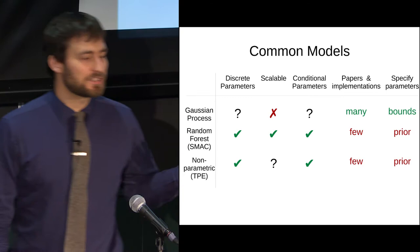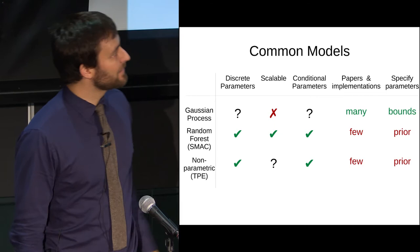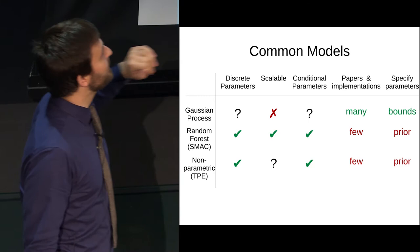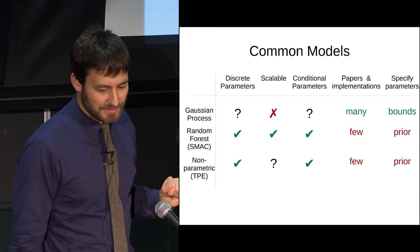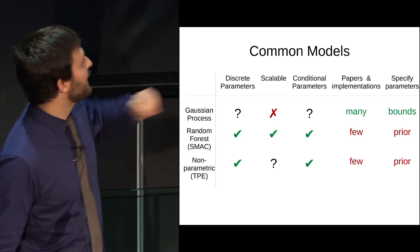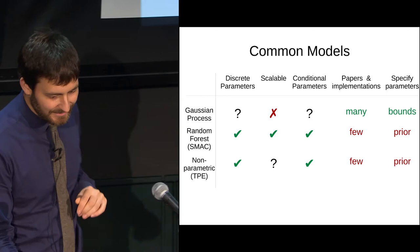Random forests are more flexible because they're tree-based and can deal with discrete parameters, conditional parameters, and they're scalable — but there's only one implementation out there from one group. For continuous parameters, you need to specify a prior. The nonparametric method also works quite well, though the person working on it created a startup. All these surrogate models have different strengths and weaknesses.